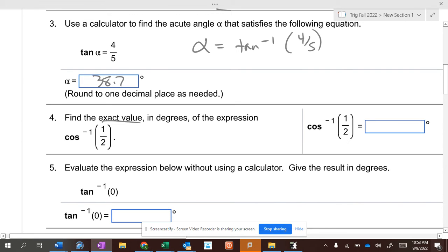When it says exact value, that tells you you want to use your unit circle. Where is the cosine of 1 half at? Well, it also works to use your calculator on this one. So, either your calculator or your unit circle works for this one.